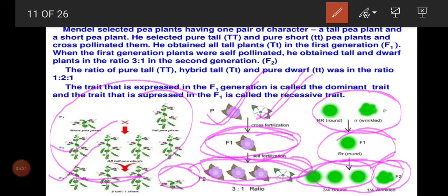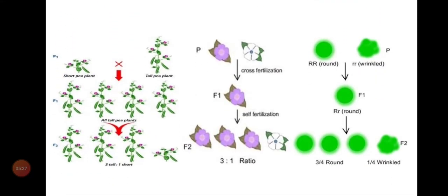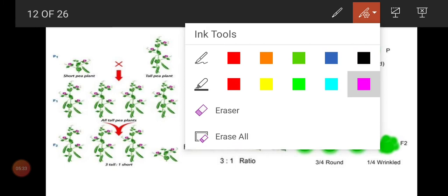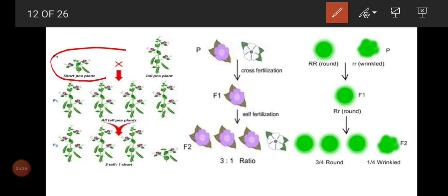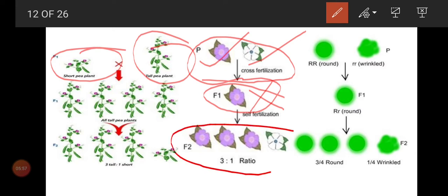The monohybrid cross structure: the first cross is cross-fertilization, where we cross a tall pea plant with a dwarf pea plant. The F1 generation plants were then self-fertilized. For example, crossing violet with white gives F1 violet; self-pollinating F1 violet gives F2 with three violet and one white flower. The same pattern can be seen with round and wrinkled seeds.